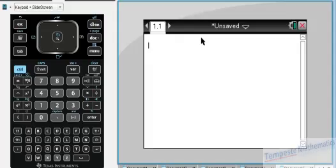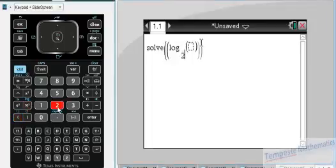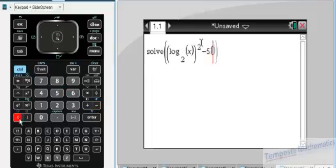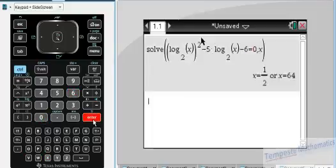Show you quickly how to do that on the CAS. Once again, you're going to use solve. And we are going to solve, here it's important that we put our log base 2 of x in brackets, and then our squared outside the brackets, minus 5 bracket, once again, log base 2 of x, minus 6 equals 0, we are solving for x, press enter, x is 1 half or x equals 64, beautiful.